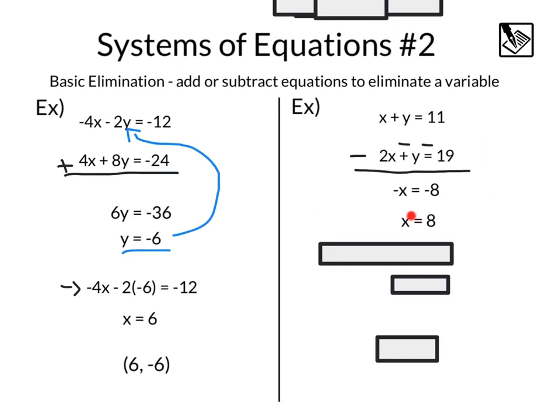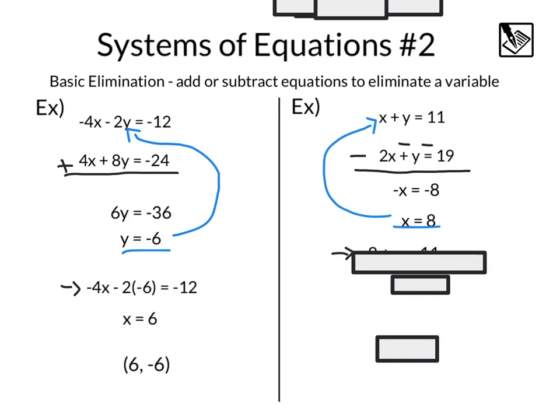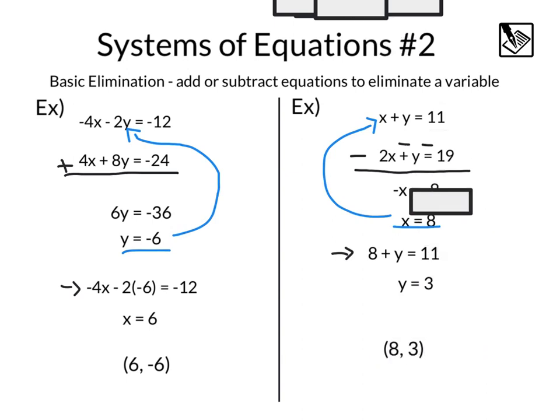We want to substitute that back in to one of the equations. Let's go ahead and take that x equals 8 and put that into that equation there. That'll give us 8 instead of x. 8 plus y equals 11. Solving that, we'll get y equals 3 and a point as our answer, 8 comma 3.